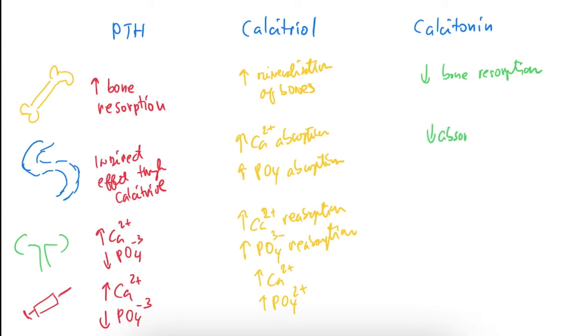Calcitonin also blocks absorption of calcium in the GI tract and blocks or decreases reabsorption of calcium and phosphates in the kidneys, so they are both decreased. The final effect of calcitonin on blood levels is that it decreases calcium in blood and also phosphates in blood.